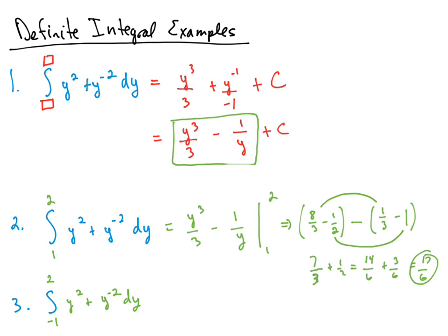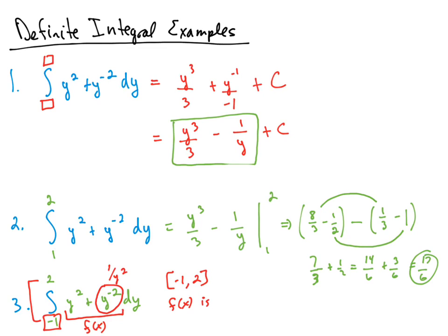I want to do one last integral that's pretty similar to these first two but with a subtle difference. Now the limits of integration go from negative 1 to 2. Before we do anything, I'm going to rewrite this as 1 over y squared, so our integrand is y squared plus 1 over y squared. These limits of integration go from negative 1 to 2, and this integrand is not defined over this entire interval — f of x is undefined at 0. So because this is undefined at 0, the function is not continuous over this interval, so we'd say it's not integrable.